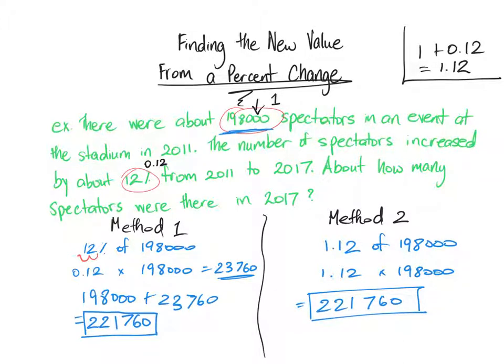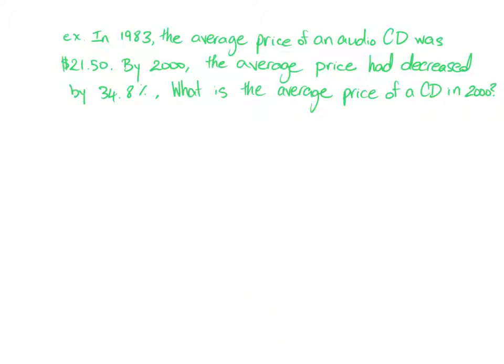Whichever method you choose is the one you should stick to. Now let's try one question with percent decrease. In this example, the average price of a CD was $21.50, but it decreased by 34.8%. We're going to go ahead and do this percent decrease with both methods.